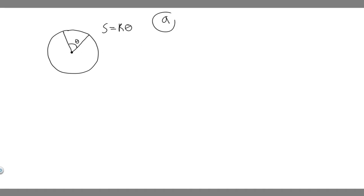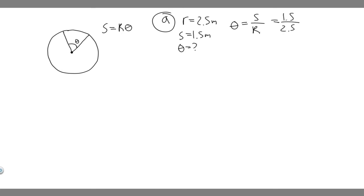Let's start with Part A. We're trying to find what angle in radians is subtended by an arc 1.5 meters long on the circumference of a circle of radius 2.5 meters. So the radius R is 2.5 meters, and the arc length S equals 1.5 meters. We're trying to solve for theta. Using S equals R theta, we rearrange: theta equals S over R, which is 1.5 over 2.5.